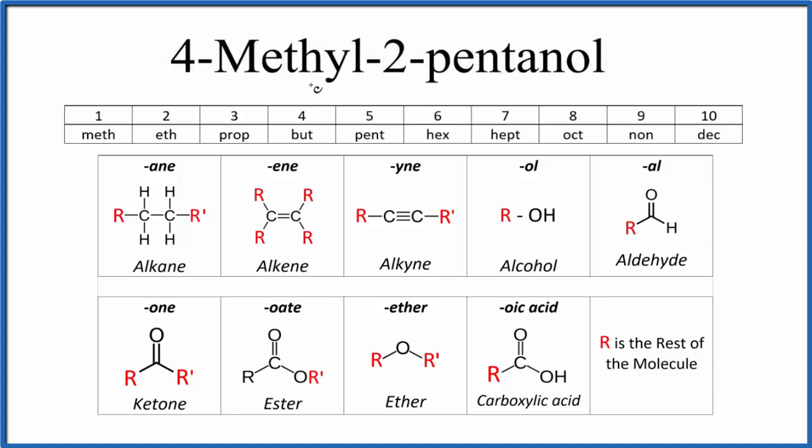We see that 4-methyl-2-pentanol ends in O-L. That tells us that we have an alcohol. So one of the carbons will be attached to an O-H group. That's what makes it an alcohol.